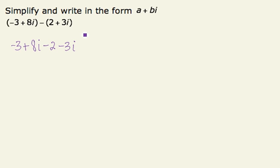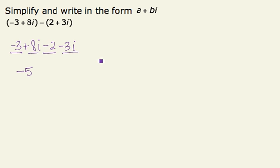From here, I'm going to combine like terms. Negative 3 and negative 2 combine to negative 5. 8i and negative 3i combine to positive 5i.